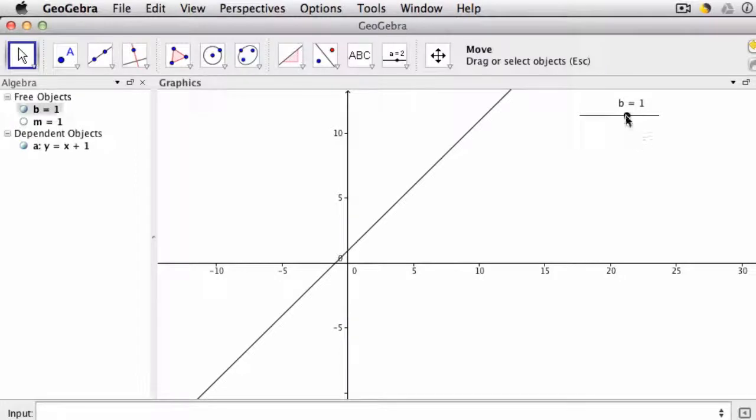So if we look here now, it shows us this slider controls the value of b, and as you move the slider you move the line.